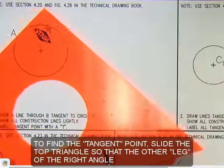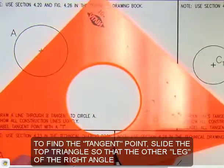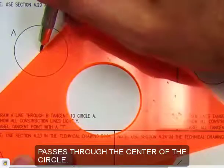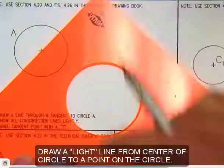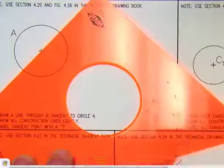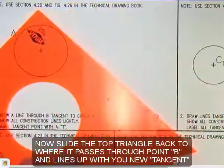You have to find the tangent point, so slide the triangle towards the right. You'll see that you can now draw a line from the center point out through the arc or circle. That intersection is the new tangent point.